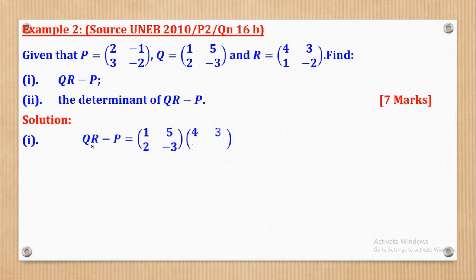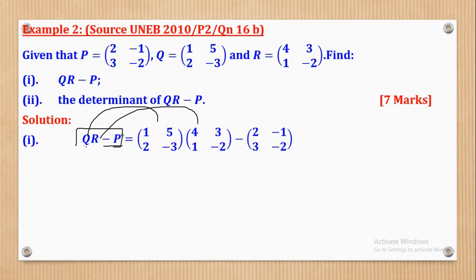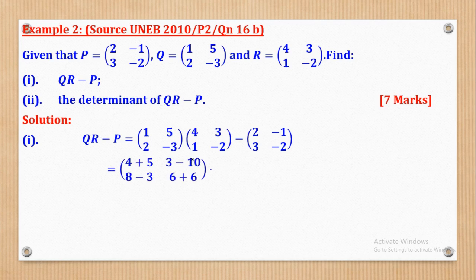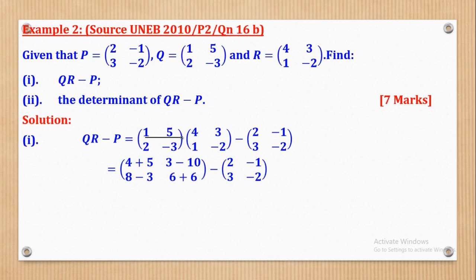First we need to compute the matrix 2R minus P. Substituting, we multiply Matrix Q by Matrix R using row by column: first row, first column gives 1 times 4 = 4 plus 5 times 1 = 5; first row, second column gives 1 times 3 = 3 plus 5 times negative 2 = negative 10.